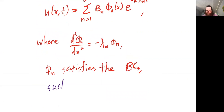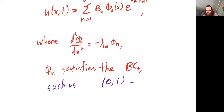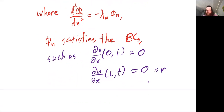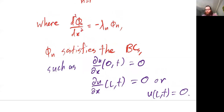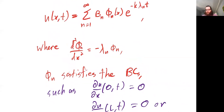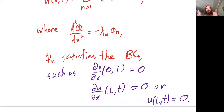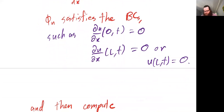Where phi sub N satisfies the boundary conditions. As one example, we could have the derivative equal to zero at one endpoint and the derivative equal to zero at the other endpoint. Or we could have the derivative at one endpoint equal to zero and the value at the other endpoint equal to zero. We need some sort of boundary conditions, and usually we'd like them to be on the same team. In general, we can construct the solution with these building blocks — the change is that phi here satisfies this ODE with whatever other boundary conditions we're imposing, not necessarily zero temperature.